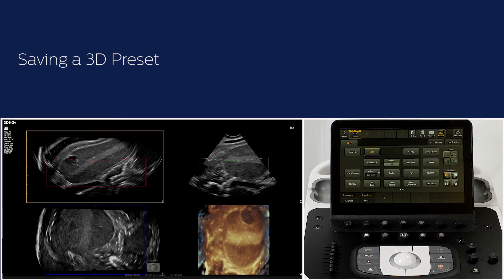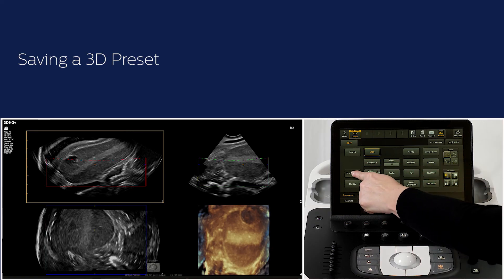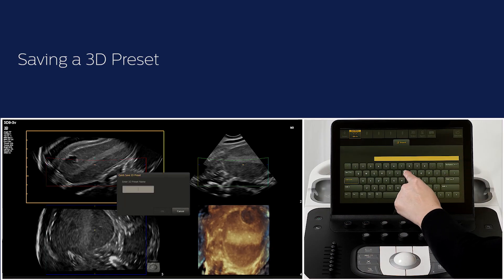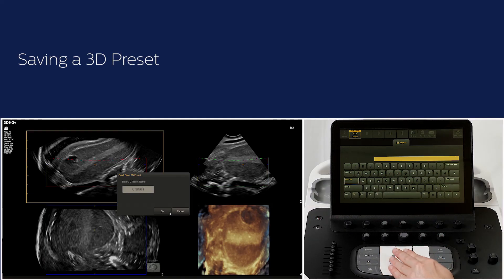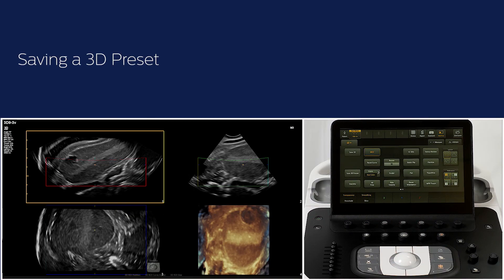For 3D and 4D acquisitions, different settings are needed depending on the anatomy that you are looking at. After you have optimized your data set and volume image, you can save your settings — which include multiple 3D and 4D parameters — by pressing Save 3D Preset on the touch screen. Provide a name for your preset and you can directly use it in the future with all your settings saved, for example for an acquisition of the uterus or ovary.